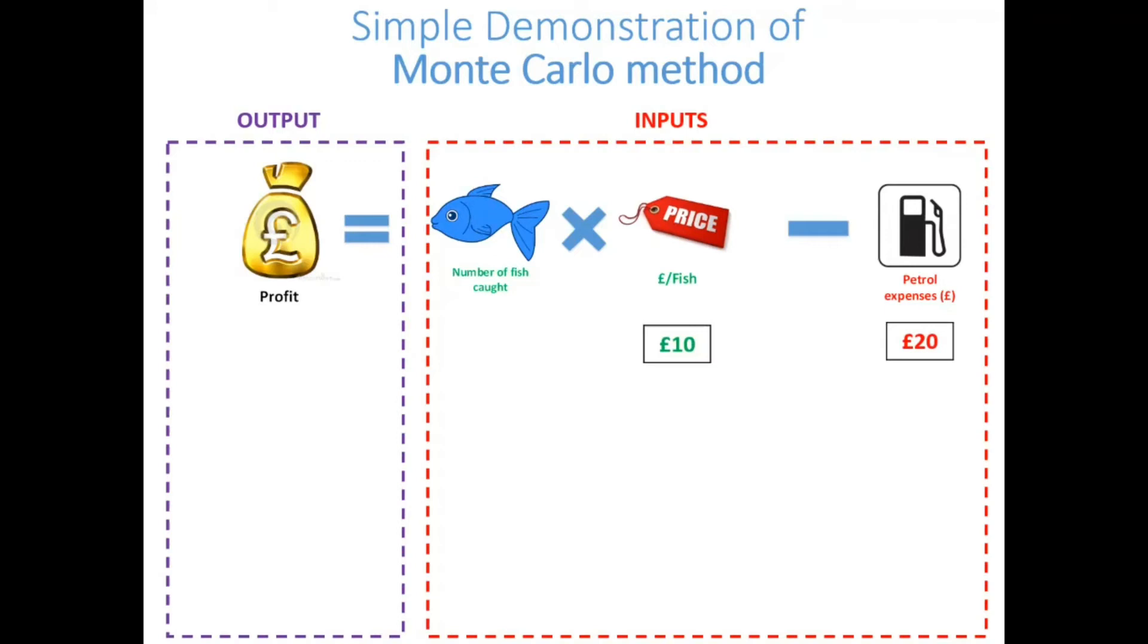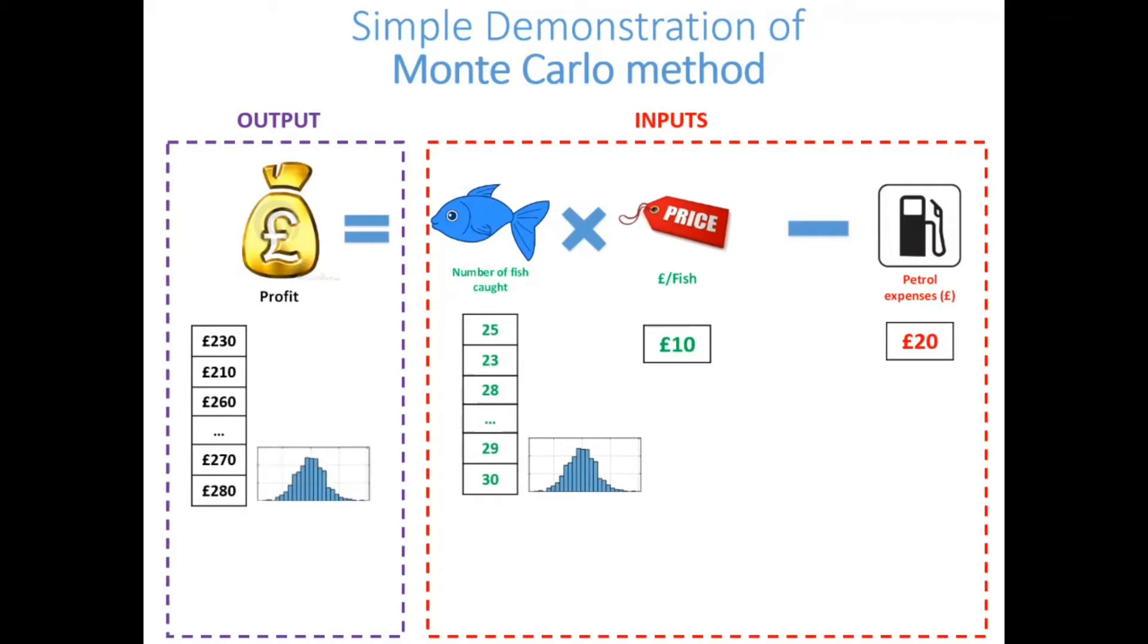These two inputs have fixed values whereas the number of fish caught is uncertain. So the fisherman tries to model this input as a range of values. Based on these inputs, the output profit can be calculated as a range of values. And from this, the fisherman can calculate the maximum profit, minimum profit and the average profit.